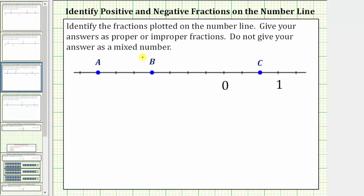The first step is to focus on the unit, which is the length from zero to one on the number line. This length is equal to one unit, and notice how the tick marks cut or divide this length into one, two, three equally sized parts or pieces, which means a length between tick marks is equal to one third of a unit.